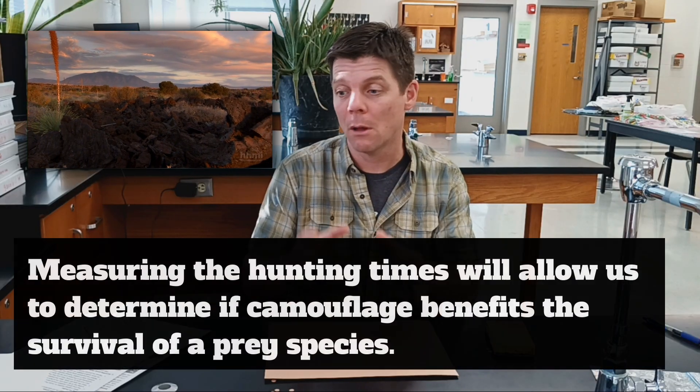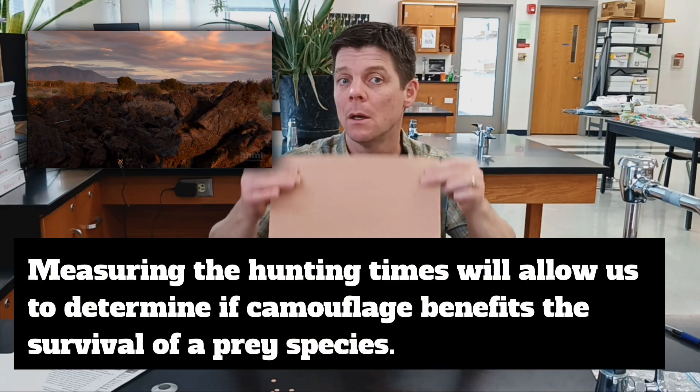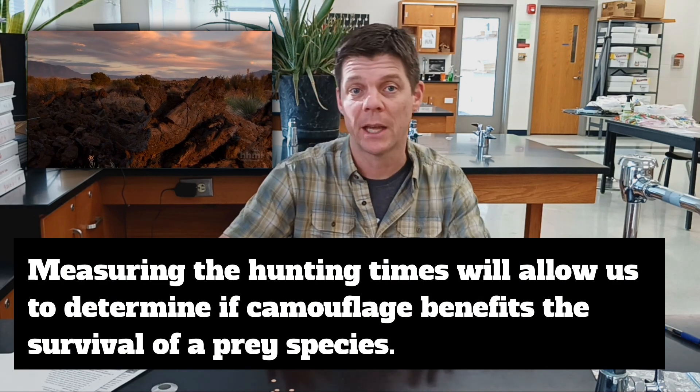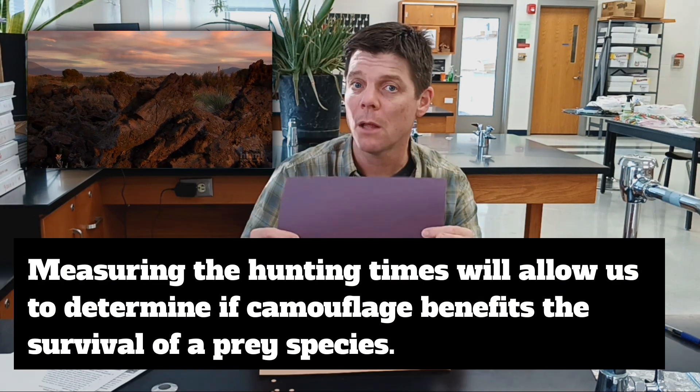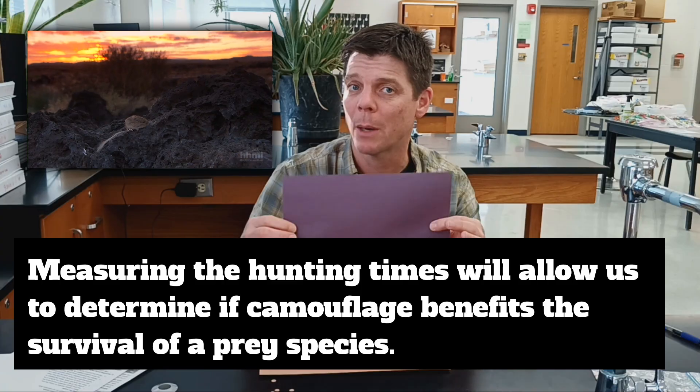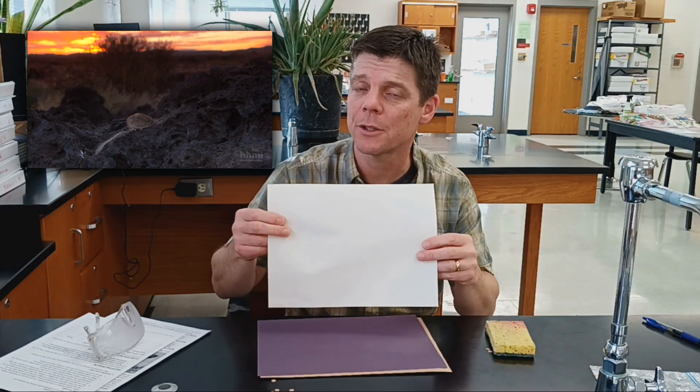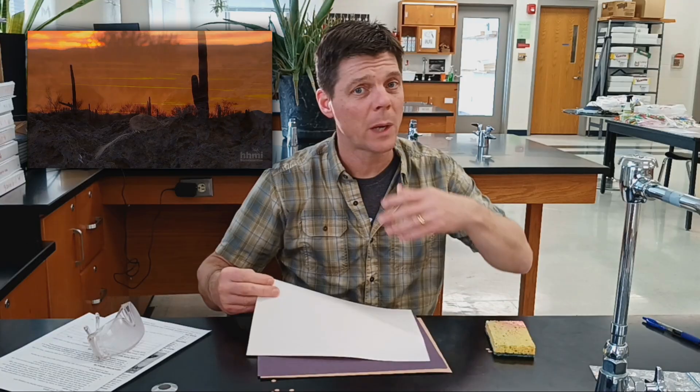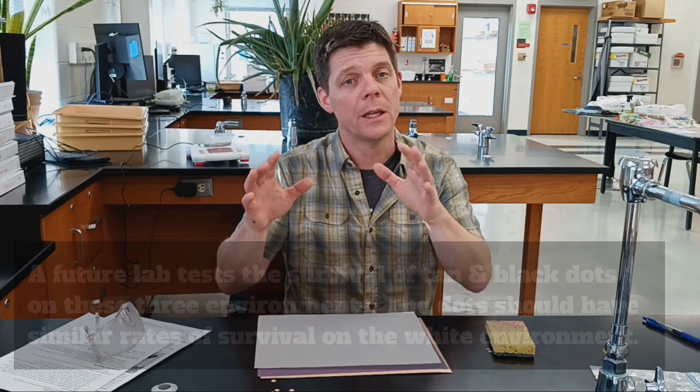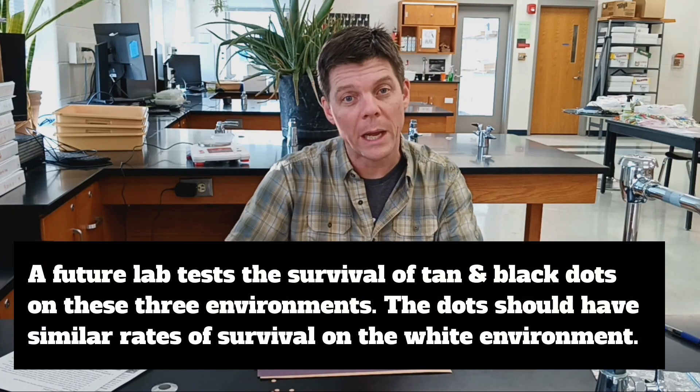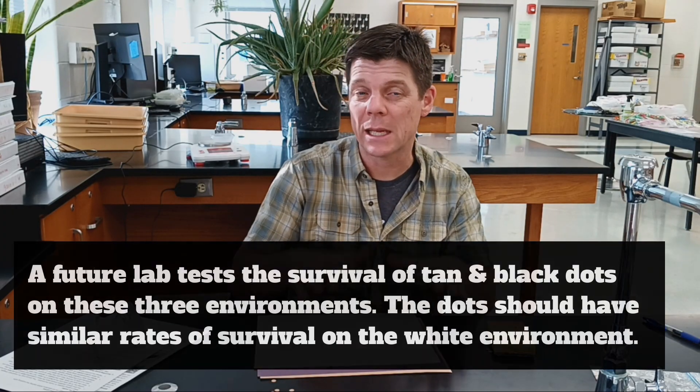What we do next in class is we'll gather up all the data from all the groups of hunters who are completing this task. So we'll get a report of how long it took everybody to complete the hunting on the tan field, representing sandy ground. How long did it take on the black field, representing that volcanic rock, and how long it took on the white field. Now this could represent wintertime when there might actually be snow that's falling. In terms of experimental design, the white field is what we call a negative control.